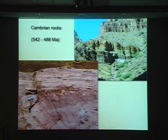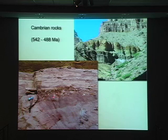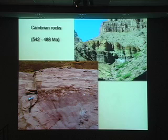Here we are in a place called Blacktail Canyon in the bottom of the Grand Canyon, and we can actually see the Vishnu Schist, the top of which has been planed off by erosion and is overlaid by the oldest of the thick stack of sedimentary rocks — the Cambrian beach sandstone.